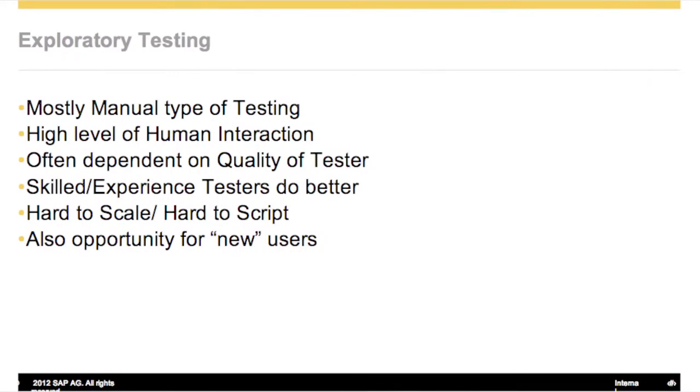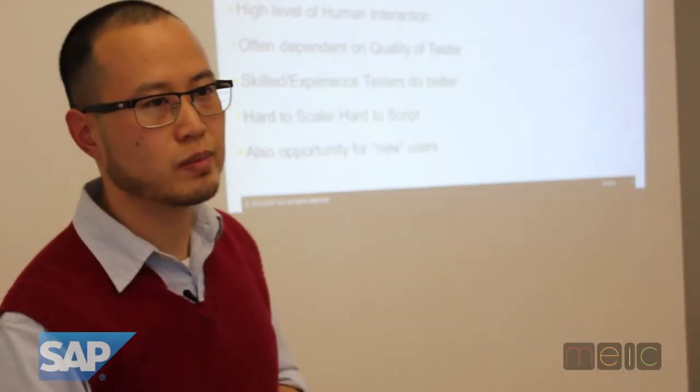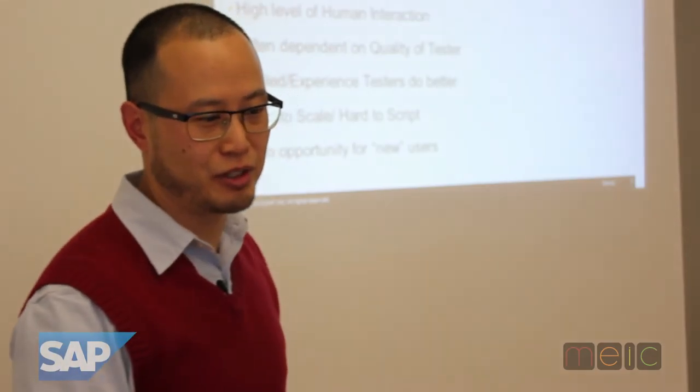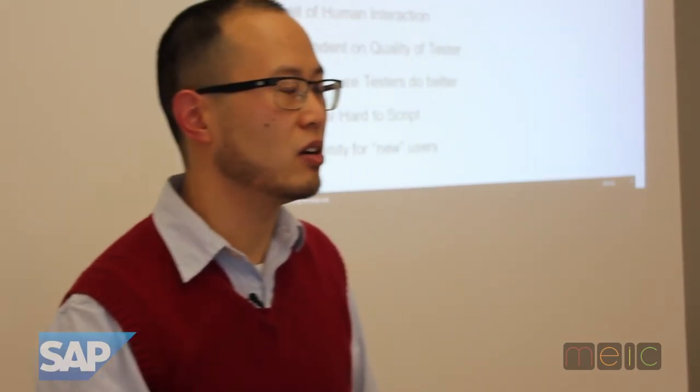The human part is key to the exploratory part. Computers, even with the machine intelligence algorithms we have, are not the greatest explorers. Results are often dependent on the quality of the tester — skilled and experienced testers generally do better in exploratory testing. These are a little bit hard to scale and hard to script. But luckily, there's opportunity for new users. Automated testing has a very high ramp-up curve; you have to learn Robotium, Frank, JUnit, or something like that. For exploratory testing, you can put somebody on and say 'let's get going.'